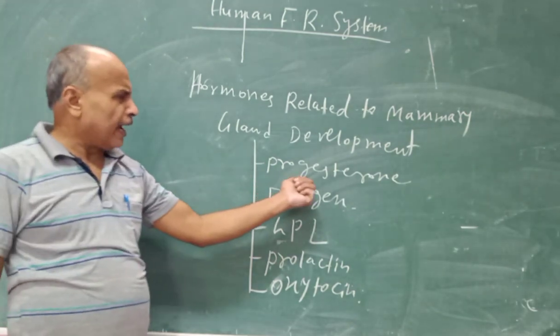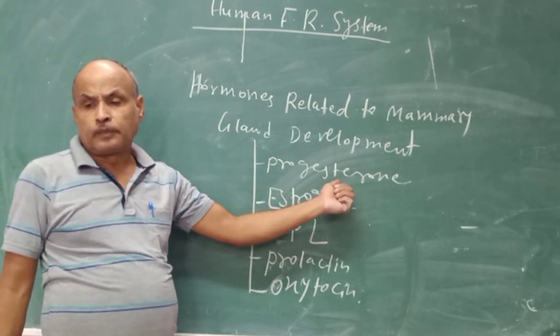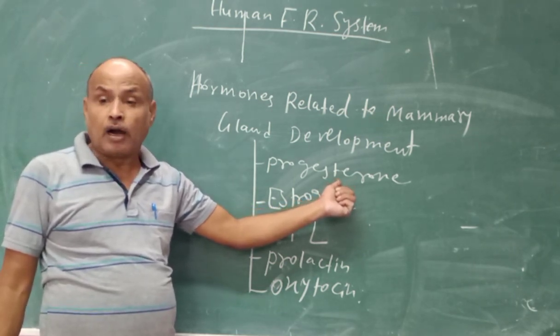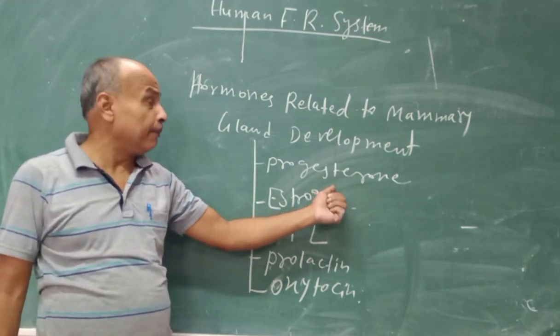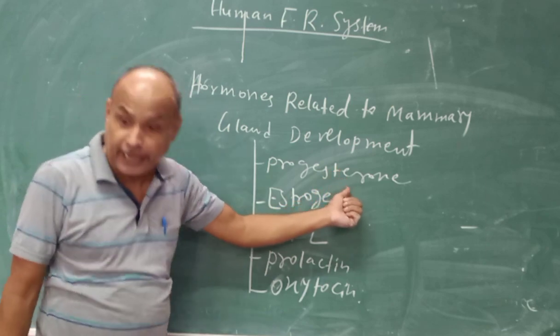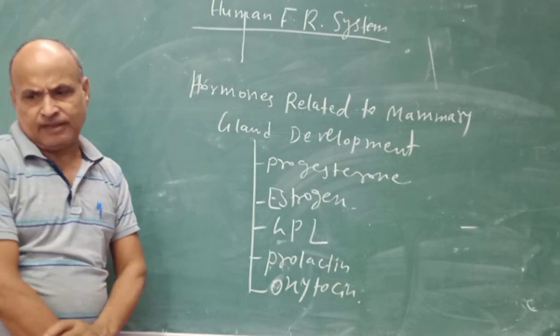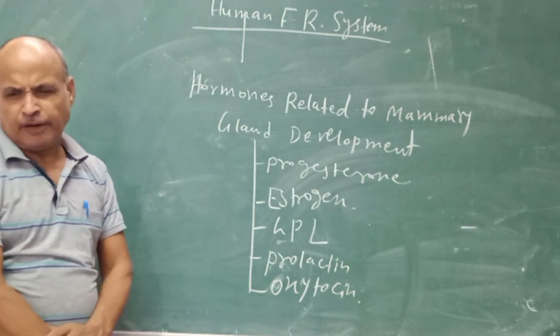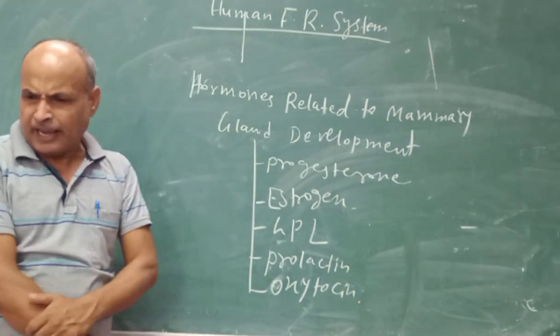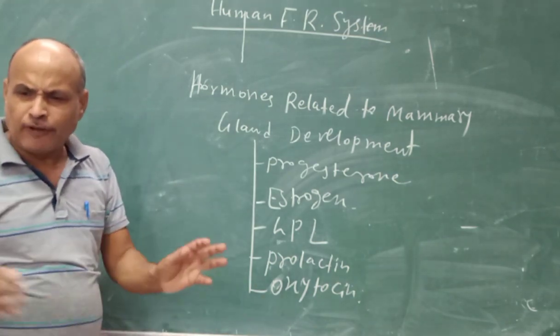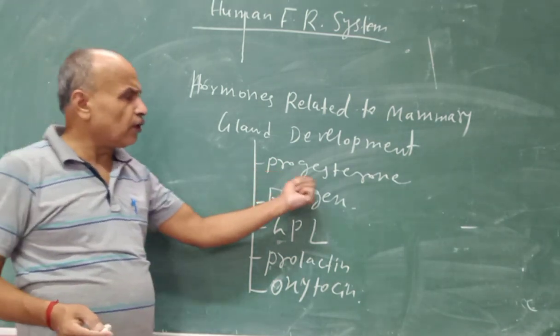Progesterone is required for the development of the alveolar tissue. The alveolar tissue development of the alveolar tissue is produced by progesterone. The alveolar tissue develops under the guidance of progesterone.